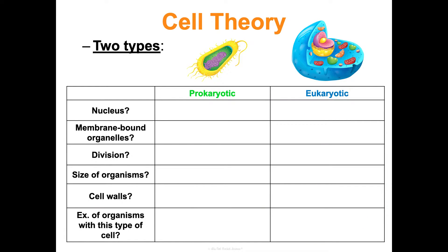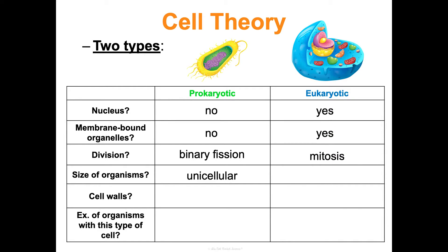The main difference between prokaryotic and eukaryotic cells is the presence or absence of a nucleus. 'Pro' means no — prokaryotic cells do not have a nucleus, while eukaryotic cells do. Prokaryotic cells also lack organelles, while eukaryotic cells have membrane-bound organelles. Prokaryotes divide by binary fission; eukaryotes divide by mitosis. Prokaryotic organisms are unicellular, whereas eukaryotic organisms can be uni- or multicellular. Protists are single eukaryotic cells; plants, animals, and fungi are all multicellular eukaryotes.